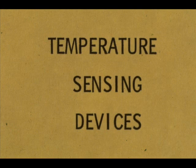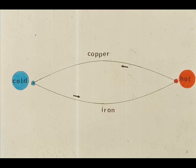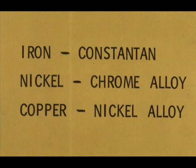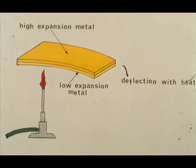We talked about temperature-sensing devices, about the thermocouple and the principles of operation. We discussed hot and cold junctions, some of the wire metals used in thermocouple installations. We talked about thermostats and the principle upon which they operated. The fact that different metals had different rates of expansion was covered, and how the bimetallic thermometer operates.